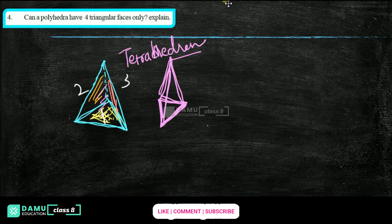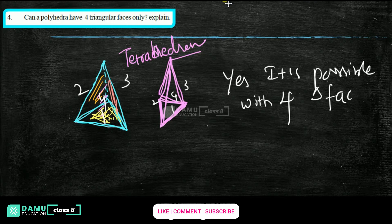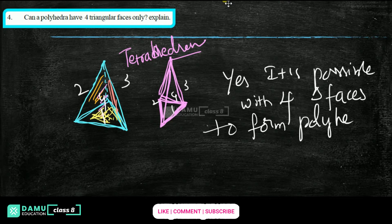Counting the faces: 1, 2, 3, 4. The back side is the 4th face. Yes, it is possible. It is possible with 4 triangular faces to form a polyhedron. So a polyhedron requires more than 3 faces — and a tetrahedron with 4 triangular faces is valid. Thanks for watching, please subscribe.